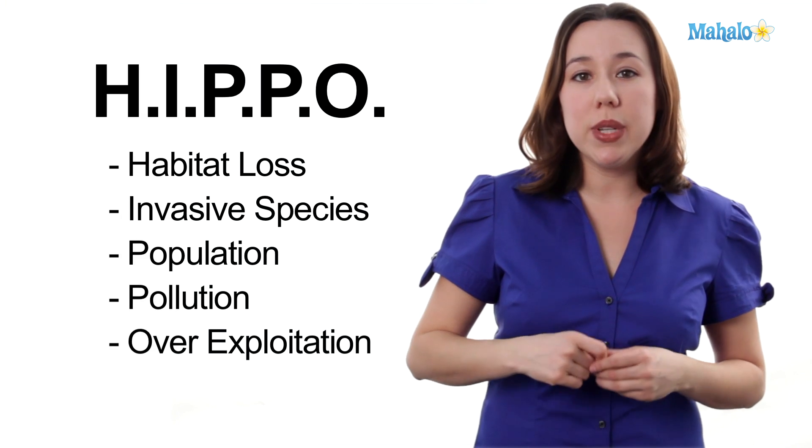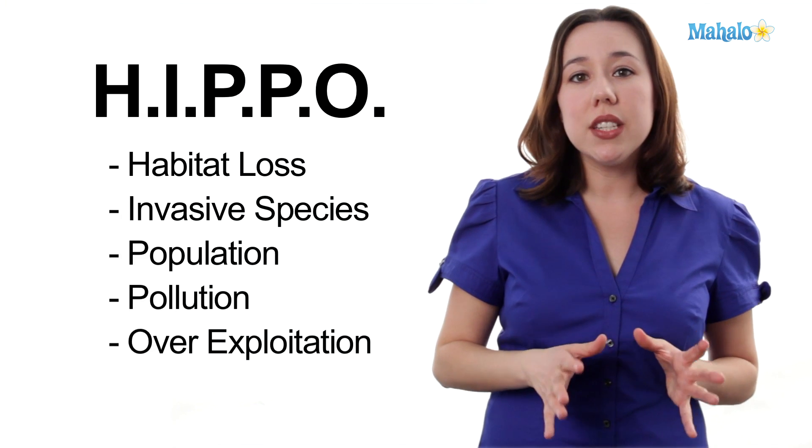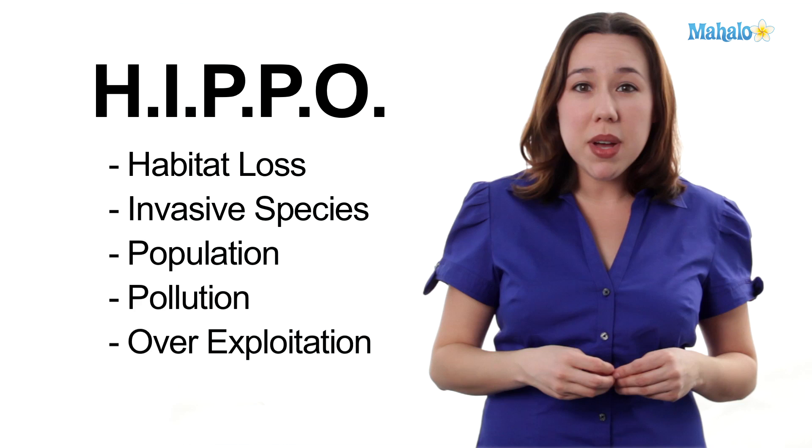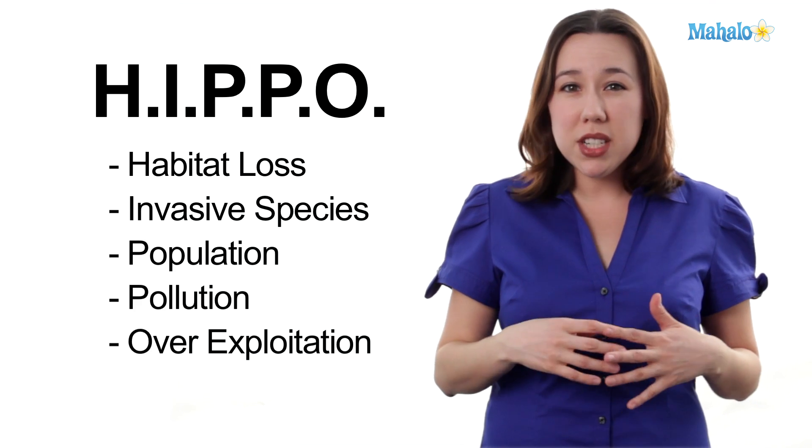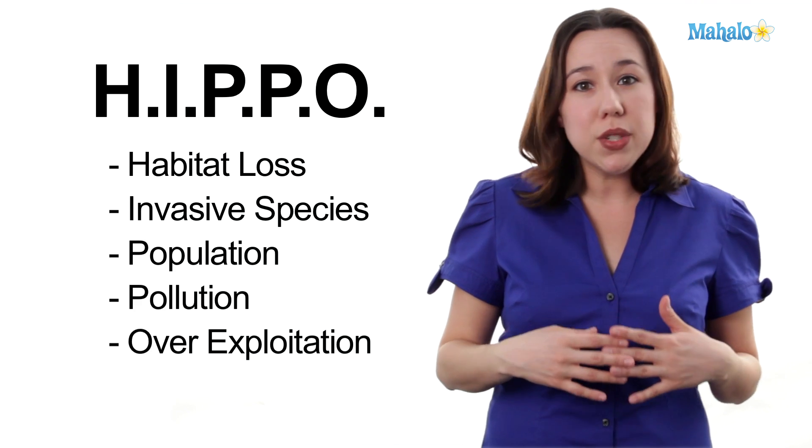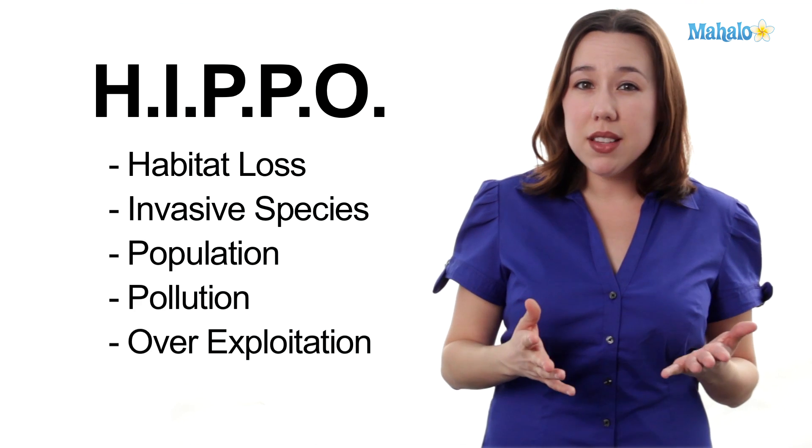Lastly, it's over-exploitation — taking too much from the environment, taking too much fish, or taking too much resources from the land, and this is causing a big problem. Here on the planet, we have finite resources, and there's only so much available. If we continue to take and waste, there's not going to be enough left to go around for the natural organisms living in nature as well as humans.